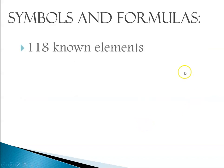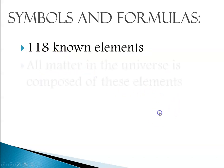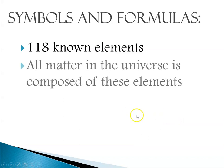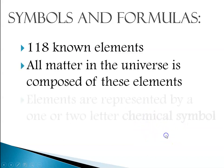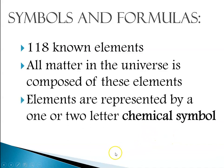When we talk about the elements, there are roughly 118 known elements. They reside on the periodic table. All matter in the universe is composed of these very same elements, and elements are represented by either a one- or two-letter chemical symbol.